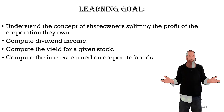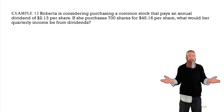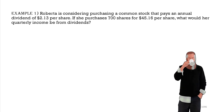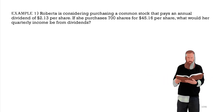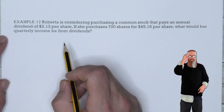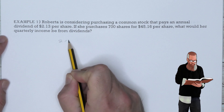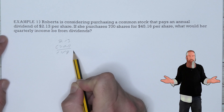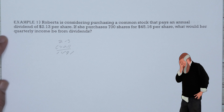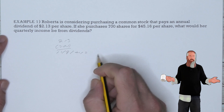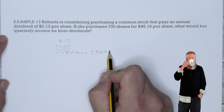Let's understand the concept of share owners splitting the profit. Roberta is considering purchasing a common stock that pays an annual dividend of $2.13 per share. If she purchased 700 shares at $45.16 per share, what would her quarterly income be from dividends? To find the annual income, multiply the number of shares by the annual dividend: $2.13 × 700 = $1,491. Dividing by four gives a quarterly income of $372.75.